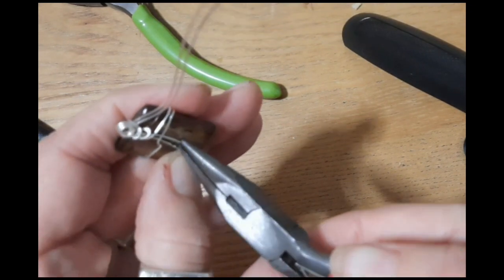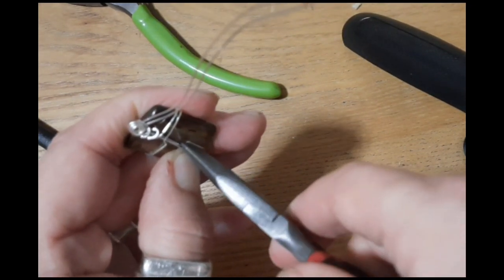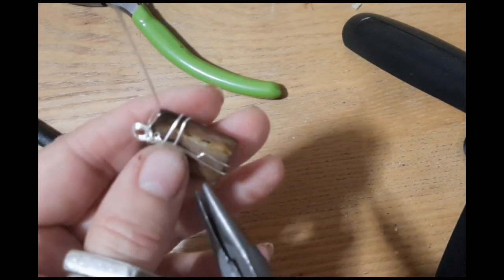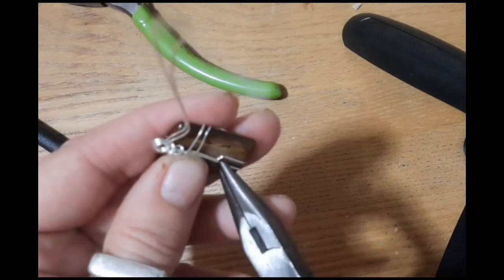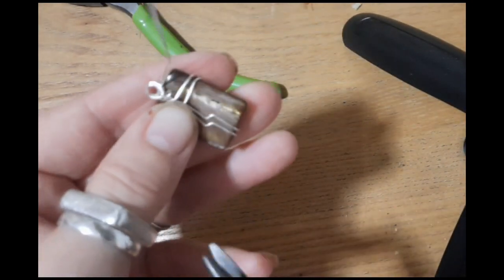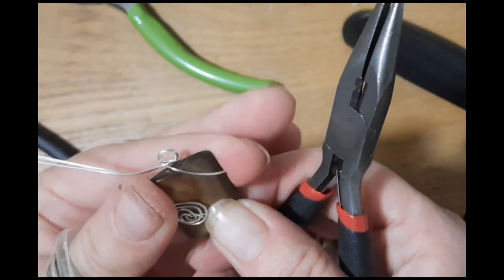By grabbing hold of the wire, twisting the pliers to create a kink. And again, twist it to create a kink. That has tightened it up.